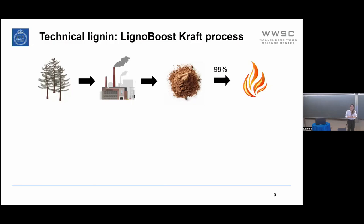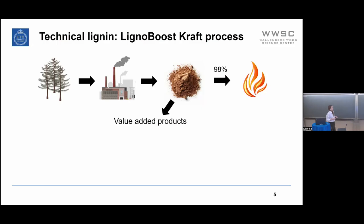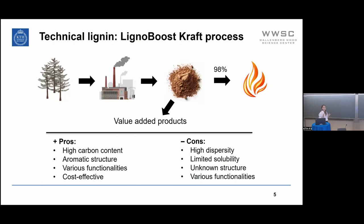Nowadays, the main source of technical lignin is the pulp and paper industry, where lignin is recovered as a brown powder, and after that 98% of this lignin is burned. Our aim here is to show that we can make products of added value. Lignin has a high carbon content, is highly aromatic, has various functionalities such as OH groups, and it is cost effective. At the same time, it has high dispersity, limited solubility, unknown structure, and these various functionalities can cause problems in downstream processes.